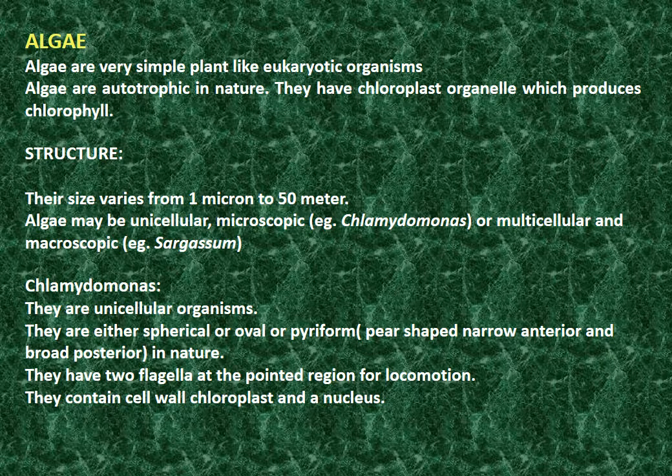Algae are very simple plant-like eukaryotic organisms. Algae are autotrophic in nature. They have chloroplast organelles which produce chlorophyll. The size varies from 1 micron to 1 meter. Algae may be unicellular microscopic or multicellular macroscopic. Unicellular algae are either spherical, oval, or pyriform in shape. Pyriform is a shape that is narrower at the anterior end and broad at the posterior end. They have flagella for locomotion and contain chloroplast and a nucleus.